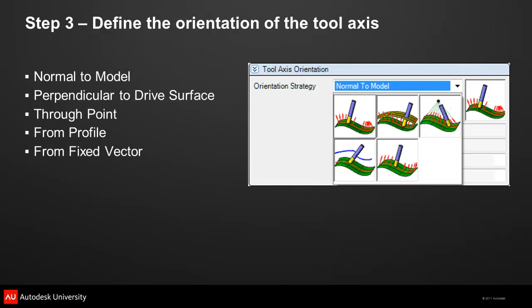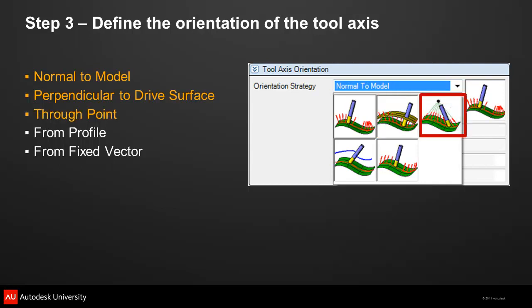After the machining pattern is defined, the fun of 5-axis begins with the decision on how to orient the tool axis. Some choices depend on the capability of the machine and some on what you want to achieve with the surface finish. The composite function has five strategies for tool orientation: keeping the tool axis normal to the model at all times; using a separate drive surface to control the tool orientation; restricting the tool axis to pass through a specified point; restricting the tool to follow along a specified path; and for 3 plus 2 machining, choosing a fixed vector for the tool axis.